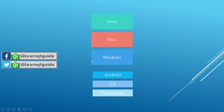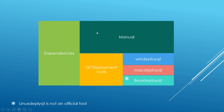Depending on the platform, the concepts are the same. The first thing to do once we have our binary is to add in the dependencies so the user can run the application without problems. There are two ways to load dependencies: manually, or using tools provided by Qt. On Windows we use windeployqt, on Mac we use macdeployqt, and there is also a tool called linuxdeployqt.